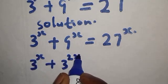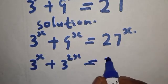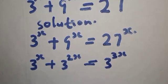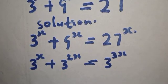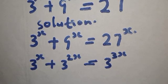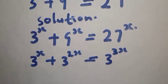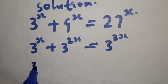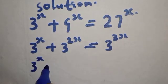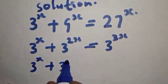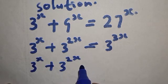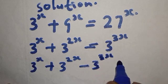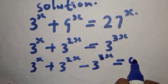27 is 3 raised to power 3, that is 3 times 3 times 3 equals 27. So the right side becomes 3 raised to power 3x. This gives us 3 raised to power x plus 3 raised to power 2x minus 3 raised to power 3x equal to zero.